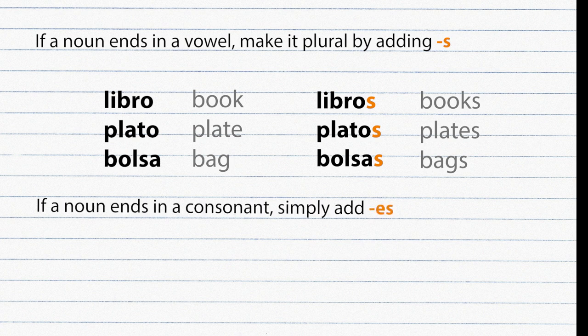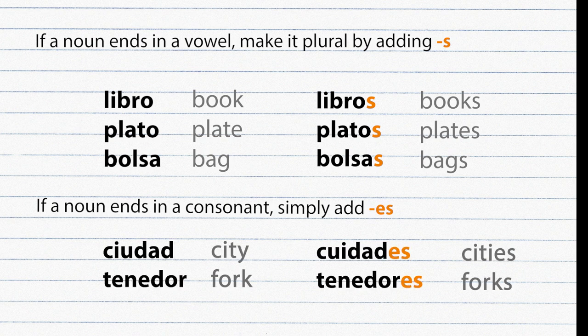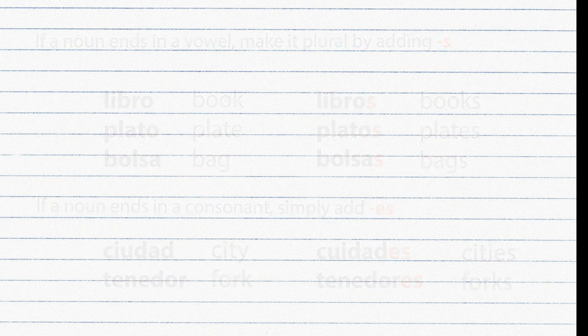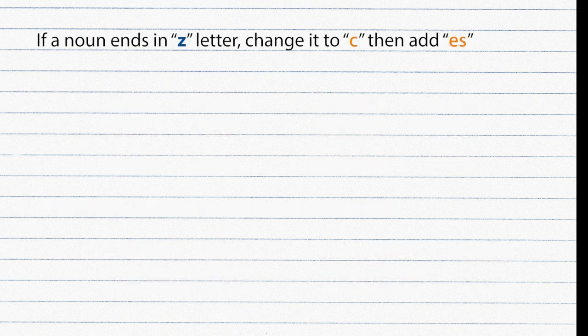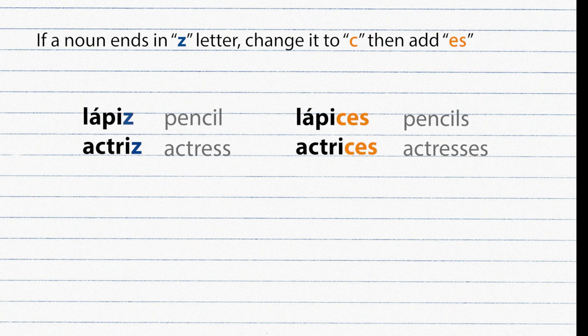If a noun ends with a consonant, add ES to make it plural. Examples: Ciudad → Ciudades, Tenedor → Tenedores. If a noun ends with the letter Z, change the Z to C then add ES. Examples: Lápiz → Lápices, Actriz → Actrices.